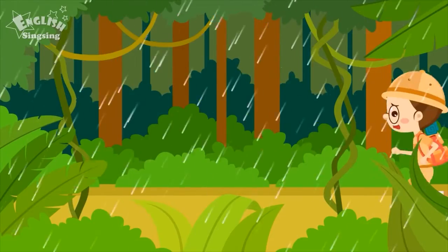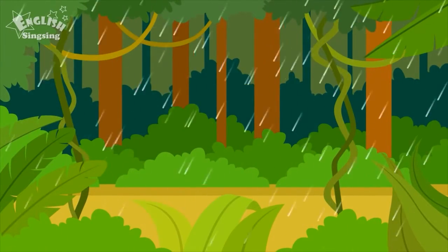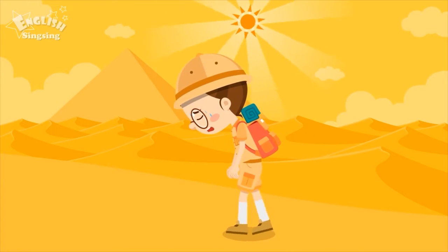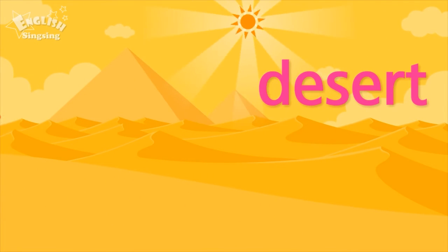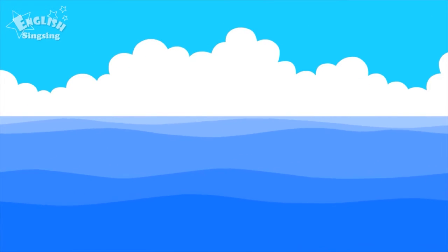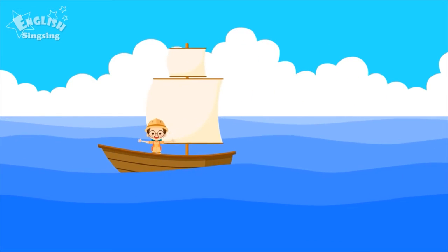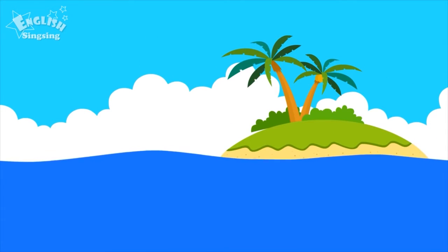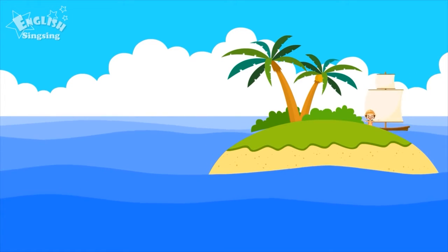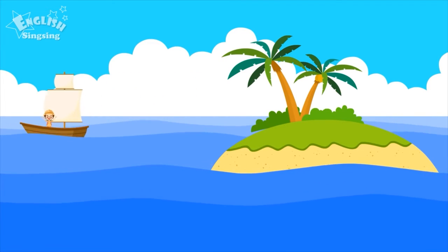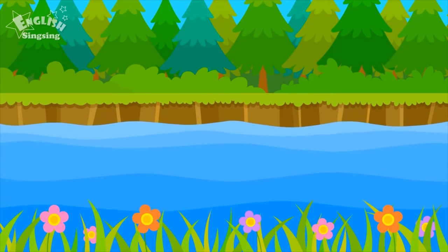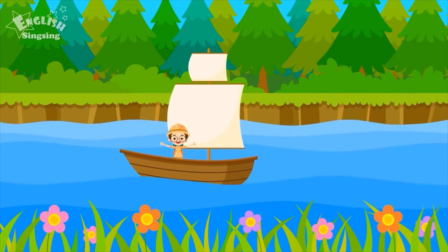Rain forest. A rain forest has lots of rain. A desert is a very hot and dry place. Desert. Sea. The sea is very deep and blue. Sea. Island. An island is surrounded by the sea. Island. River. A river flows into the sea. River.